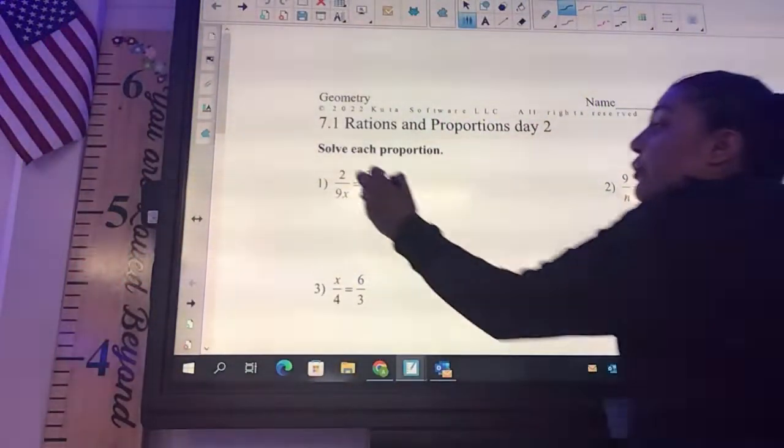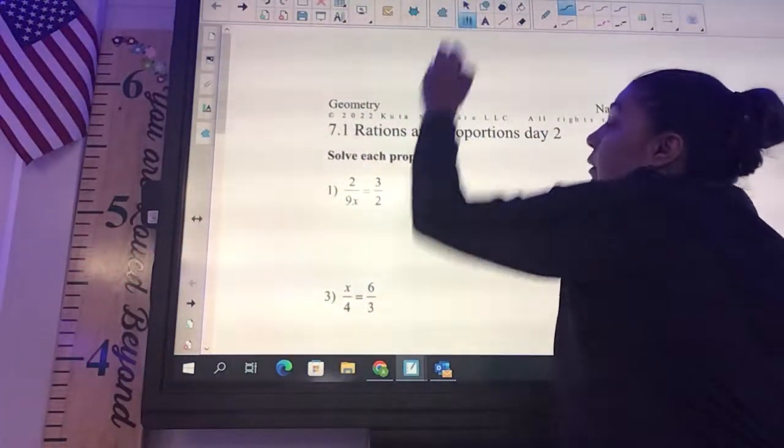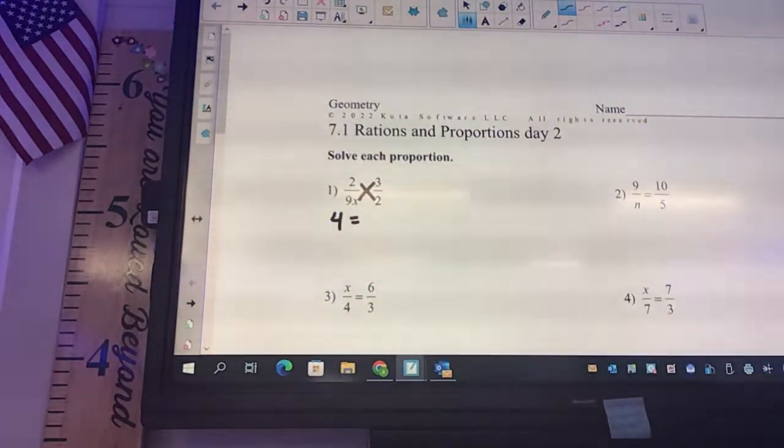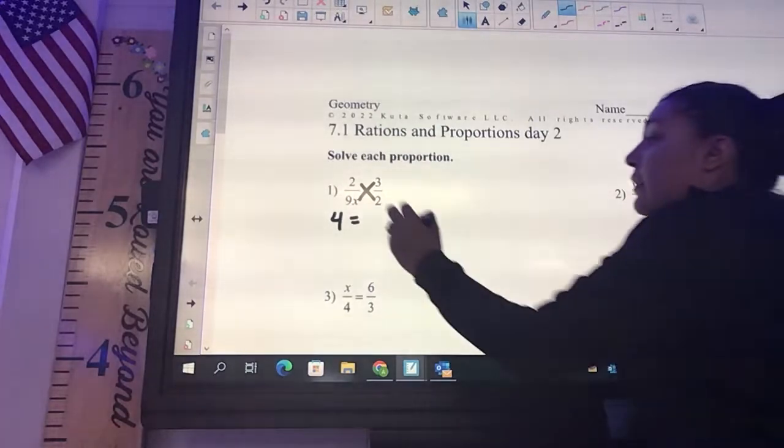I'll multiply and divide. So 2 times 2 is going to be 4, and then 9x times 3x is going to be 27x squared.